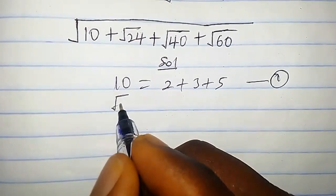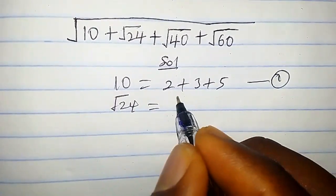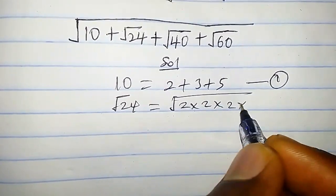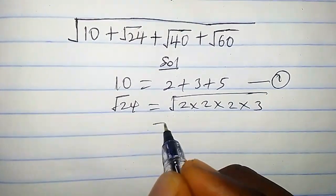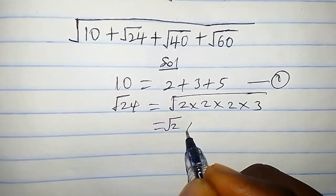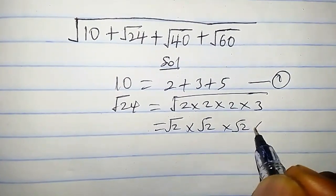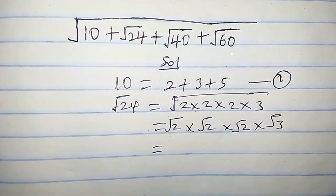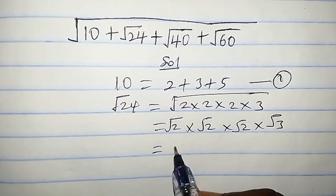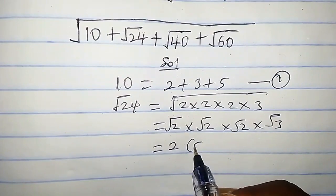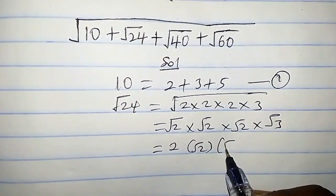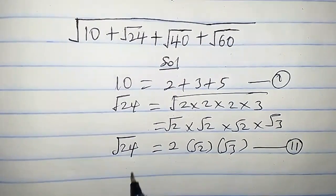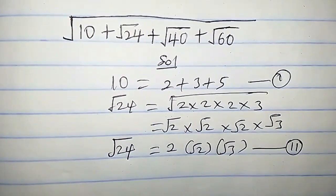Now, square root of 24. This equals we can write it as 2 times 2 times 2 times 3, which can also be written as √2 times √2 times √2 times √3. So this equals √2 times √2, that is √4, and √4 is 2, times √2 times √3. Let's call this equation 2, which is square root of 24.